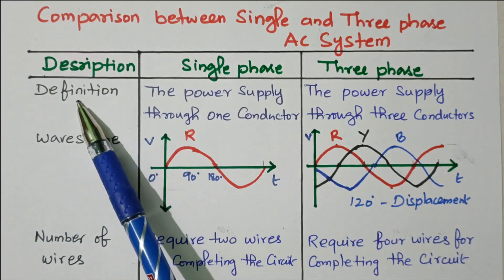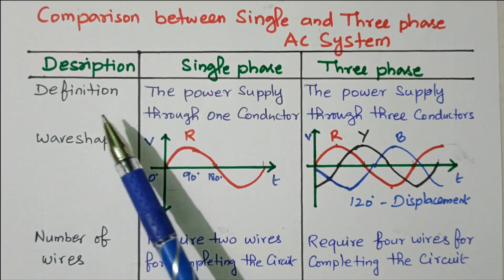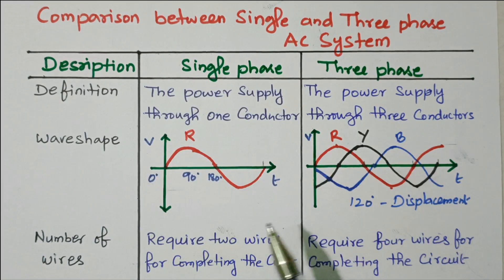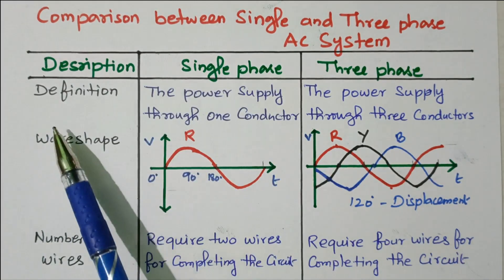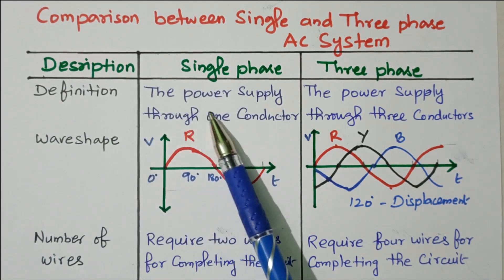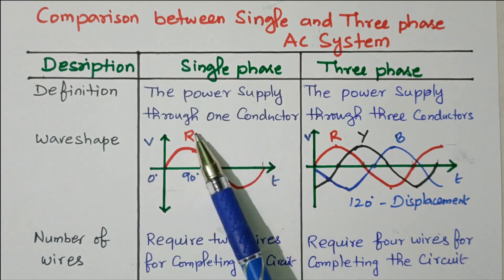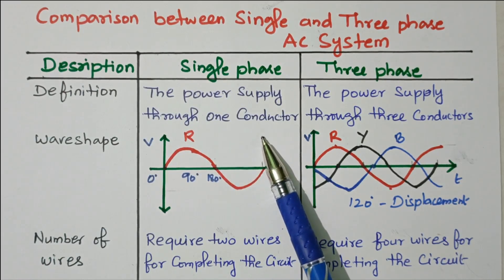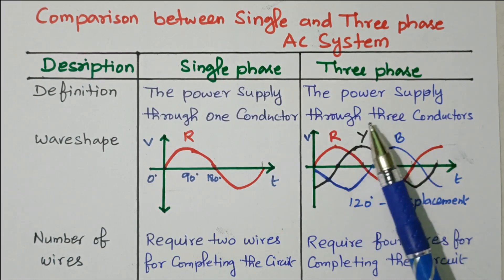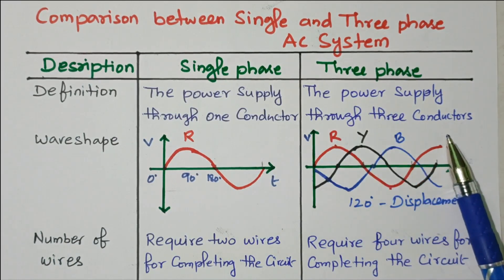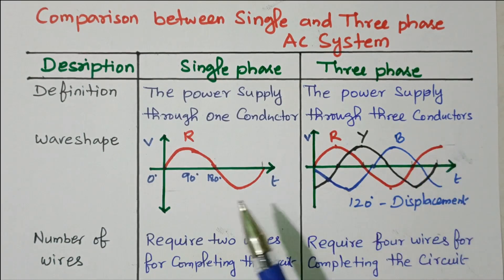We will see the definition. The first column is single-phase and the third column is three-phase. For single-phase, the power supply goes through only one conductor. In case of three-phase, the power supply goes through three conductors.